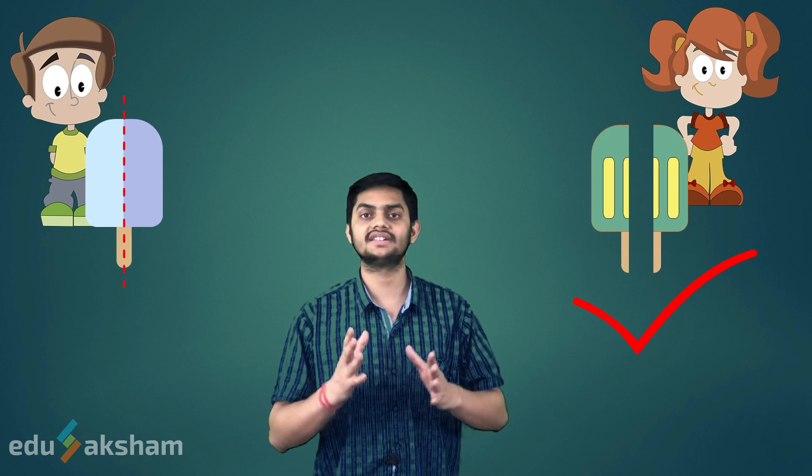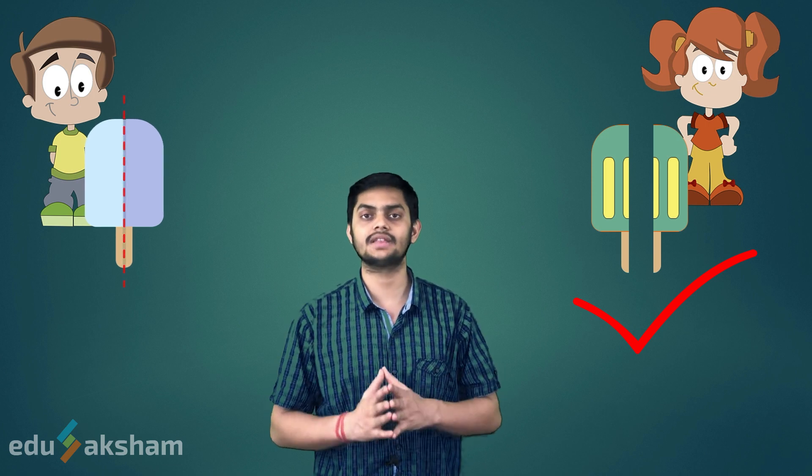When we draw a vertical line through the center of Simon's ice cream, we get two parts like this. Do these two parts look identical to each other? In shape and size, they are same, but they differ in color. Hence, these two parts are not identical. So, this is not a line of symmetry.